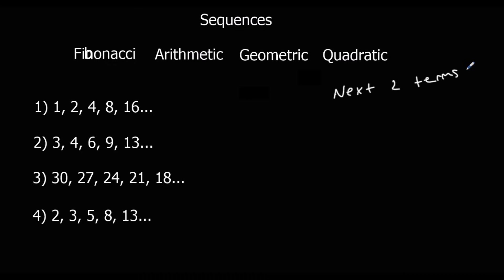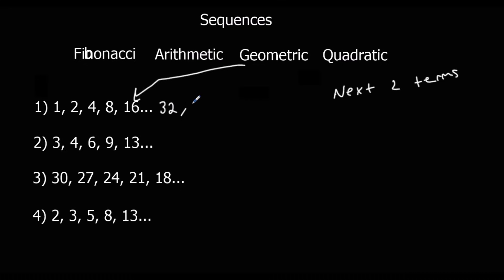The first one was 1, 2, 4, 8, 16 — multiplying by two every time, so that's a geometric sequence. The next two terms are 16 × 2 = 32, and 32 × 2 = 64.